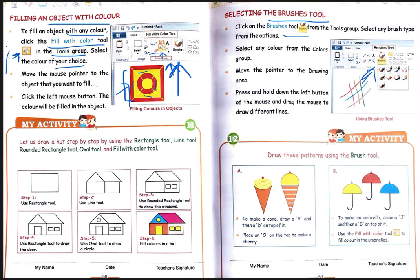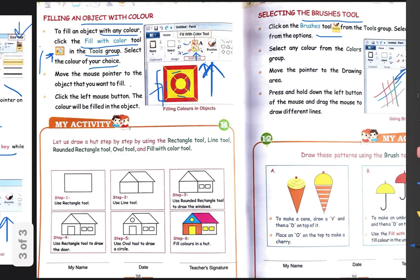Then what you have to do is just select any brush type from the options. आप अपने जो brushes हैं, बहुत तरीके के types दिए हुए हैं, आप उनको select कर लीजिए। Then select any color from the colors group — जिस color का आपको brush करना है वो color choose करिए। And then move the pointer to the drawing area. Drawing area पे जैसे जैसे brushes choose करते जाओगे, different different styles में brushes दिए हुए हैं।